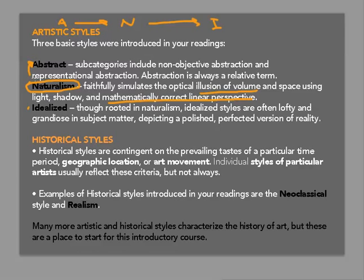When you can still recognize subject matter, we call that representational abstraction. When subject matter is completely obliterated and you can't recognize anything at all — where the canvas is basically just covered with marks and brushstrokes, say a Jackson Pollock drip painting — that would be an example of non-objective abstraction, something completely detached from what we would see in the visible world.